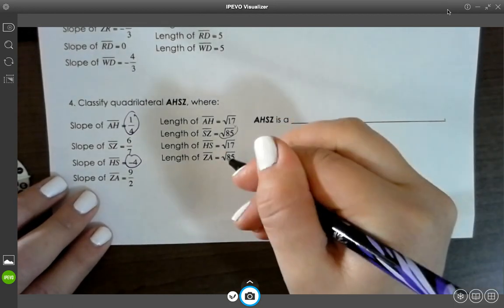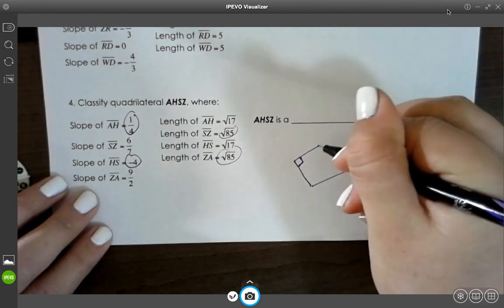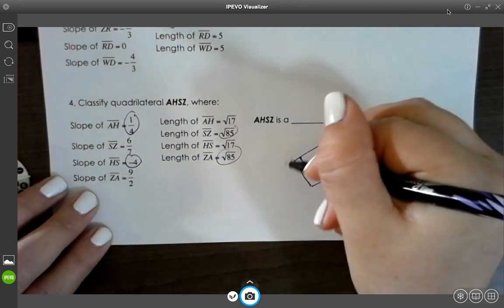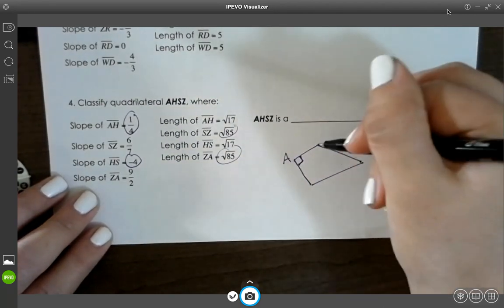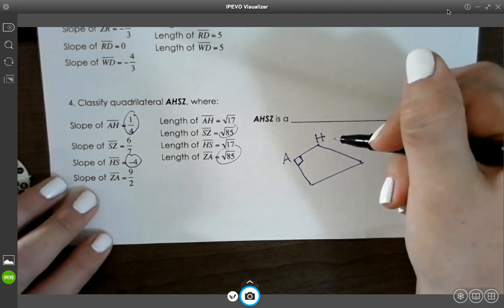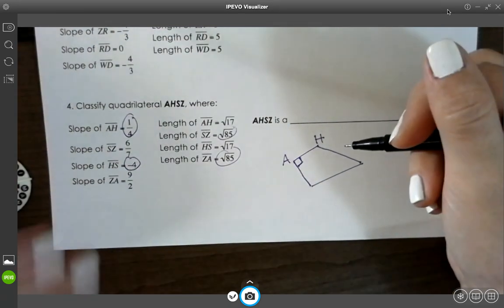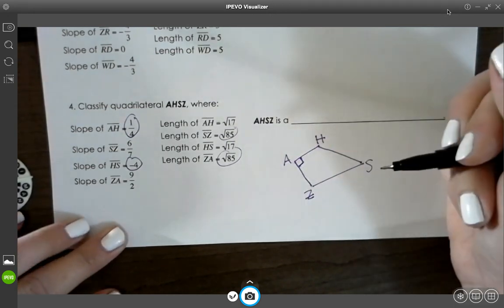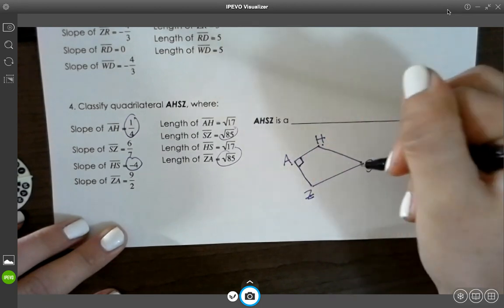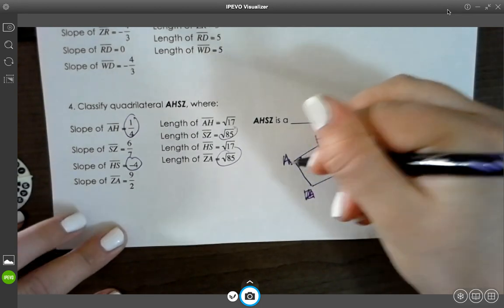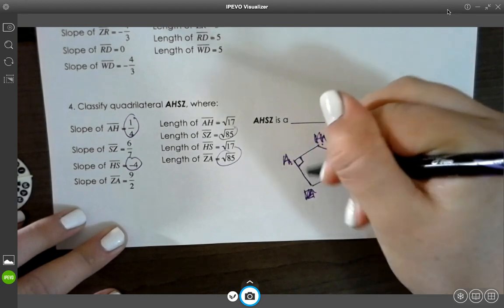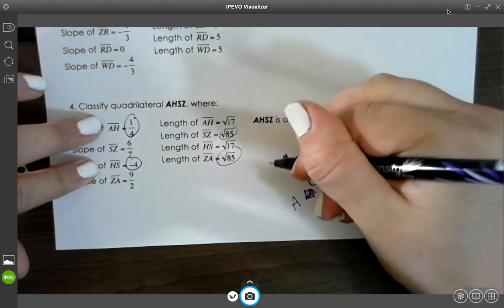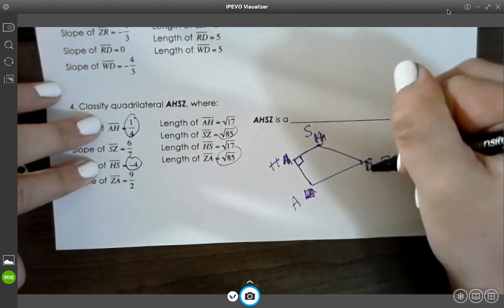But their lengths are the same. So it could look something like this. And I notice like, A, H, S, Z. Maybe it's like, actually, these lines are the perpendicular lines, so that needs to be A, H, S, Z. There we go.